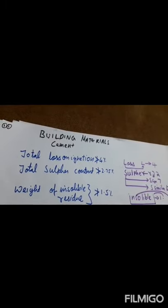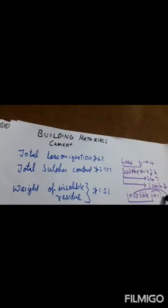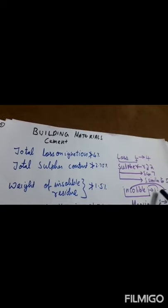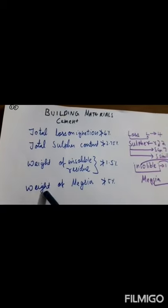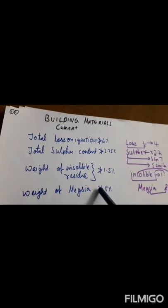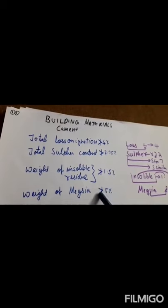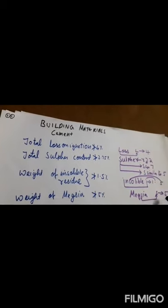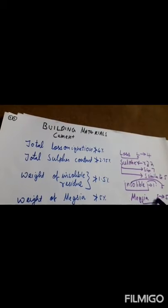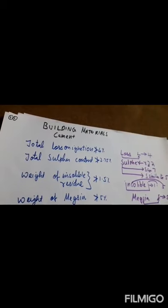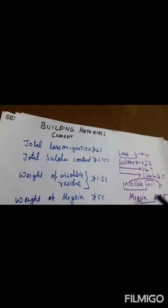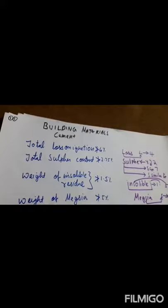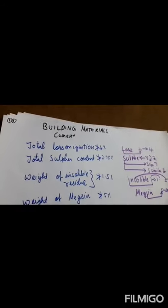The insoluble residue is 1.75% in the whole. The weight on the magnesia should not be greater than 5% — MgO should not be greater than 5% — in the igneous rock.